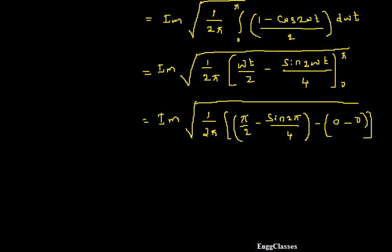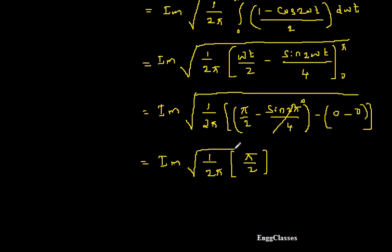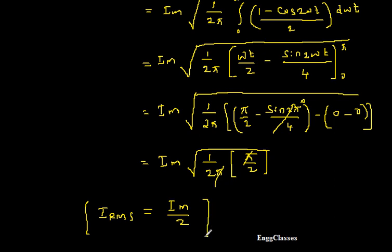Once the limits are applied, I am left with Im times the square root of (1 over 2π) times (π/2). Pi and pi cancel, giving 1 over 4 inside the square root. Taking the square root gives 1/2, so IRMS = Im/2. This is the expression for the root mean square of current: IRMS = Im/2.